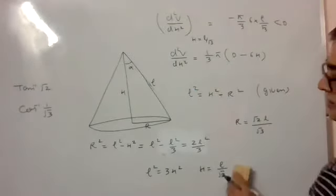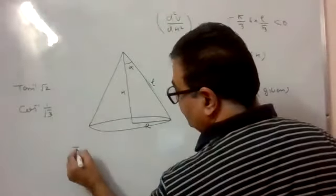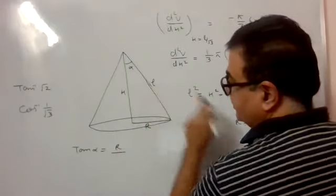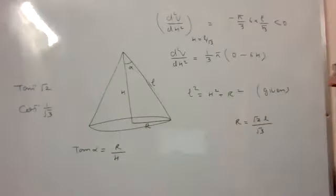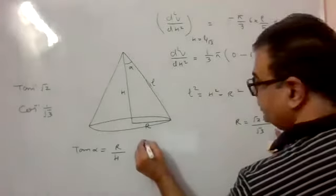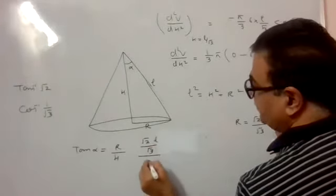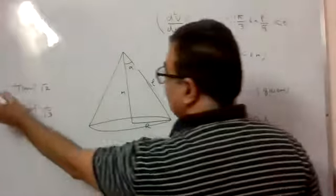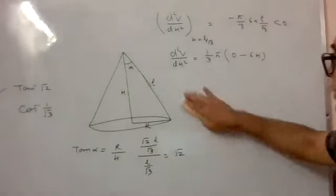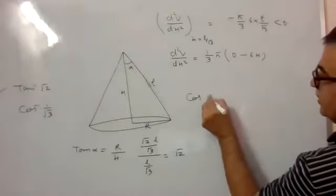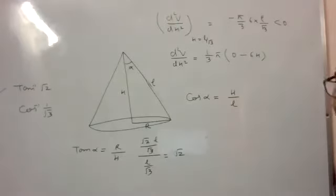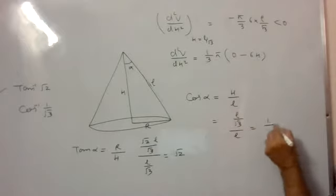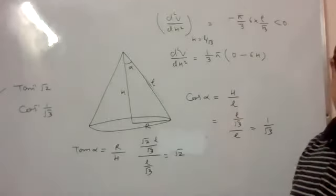Now we want tan alpha and cos alpha. Tan alpha is perpendicular by base, that is R by H. R is root 2L by root 3 and H is L by root 3, so tan alpha comes out to be only root 2. That indicates alpha is tan inverse root 2. For cos alpha, it is base over hypotenuse, so H by L, which is (L by root 3) by L, coming out to be 1 by root 3. So alpha is cos inverse 1 by root 3.